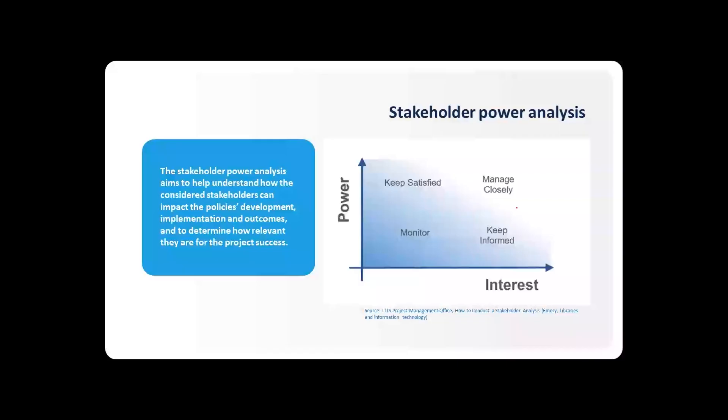The high interest but low power stakeholder groups are supposed to be kept informed because they have little influence but high interest in the issue. They may serve as important ambassadors for the project. And the risk could be that the stakeholders with greater influence dominate the discussion and design the policies. Those with low interest and low power should be monitored and they should be just kept updated.